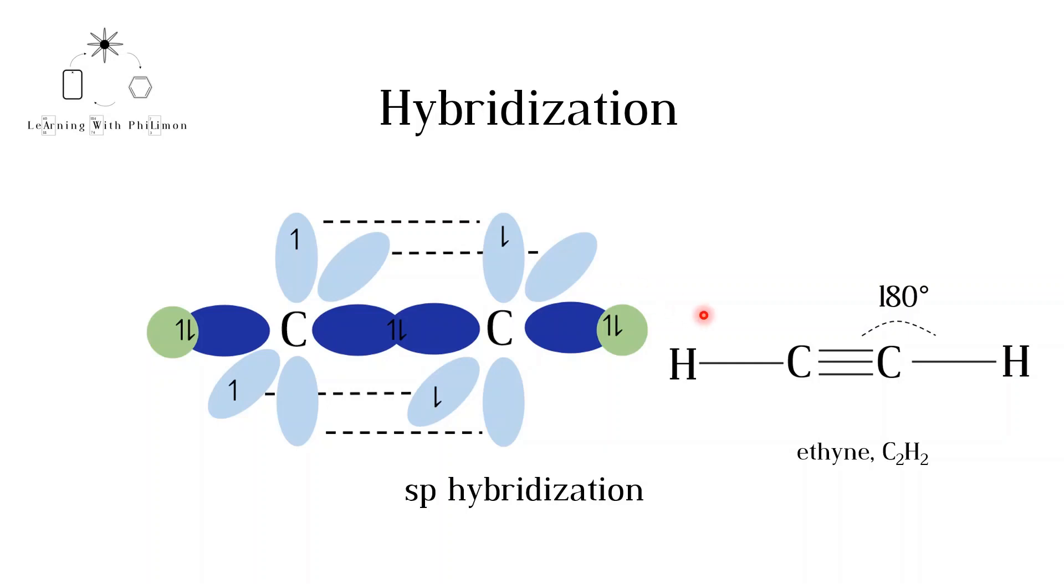When the central atom is sp hybridized, the molecular geometry is linear, with a bond angle of 180 degrees. Other common examples of sp hybridization are seen in nitrogen or hydrogen cyanide.